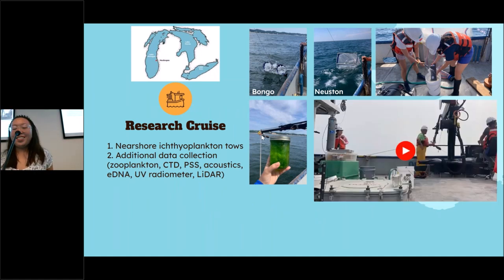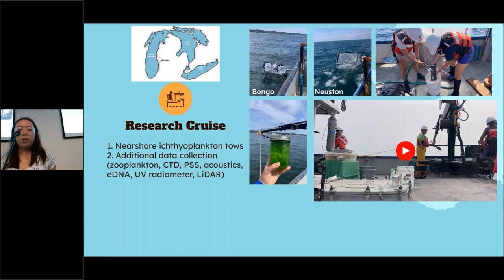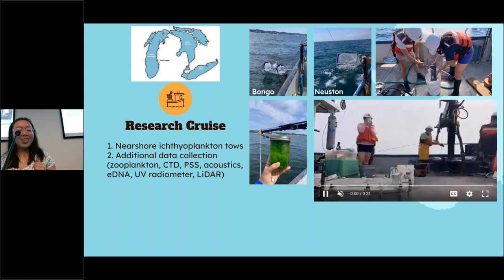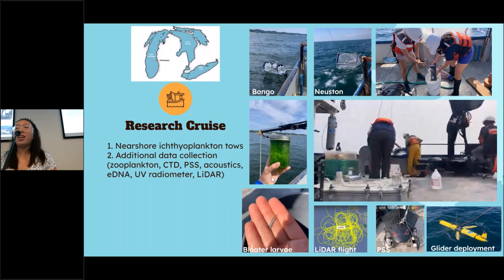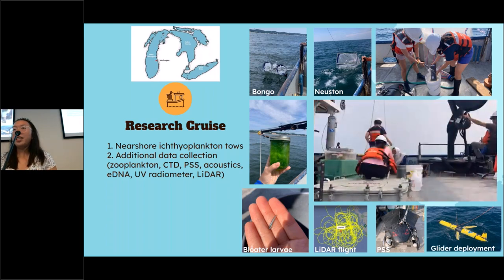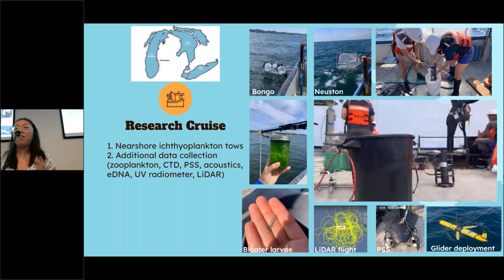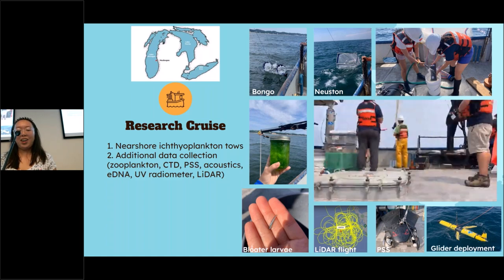For methods, we went out to Muskegon on the west side of Lake Michigan to do ichthyoplankton tows. We had two types of nets: bongo nets and nuston nets. The nuston nets are used to tow at the surface of the water column and bongo nets are towed throughout. Samples are preserved in ethanol. We also took additional data including zooplankton, CTD, plankton survey system (PSS), acoustics, and eDNA — very interdisciplinary with lots of things going on at the same time.